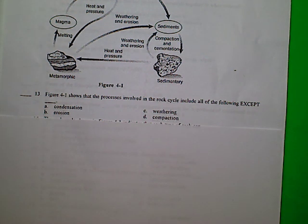13. Figure 4-1 shows that the processes involved in the rock cycle include all of the following except A. Condensation, B. Erosion, C. Weathering, D. Compaction.